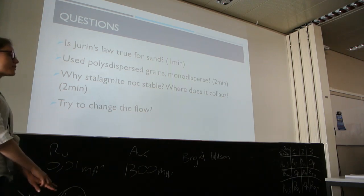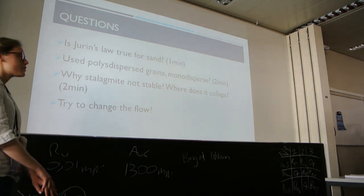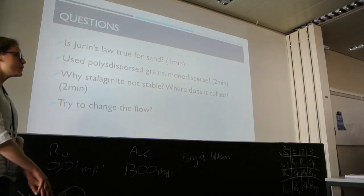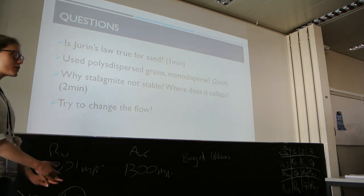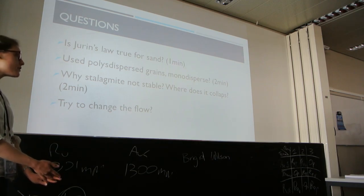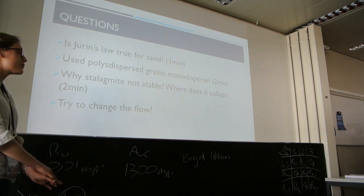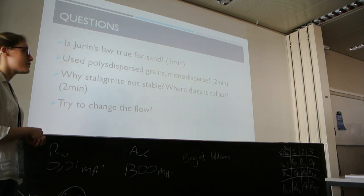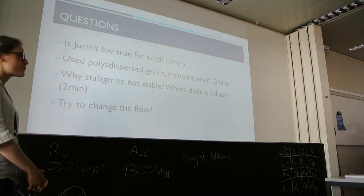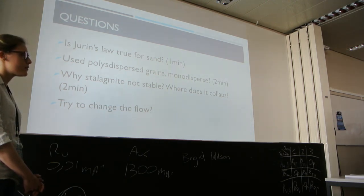On stalagmite stability and why it collapses: these towers collapse because you don't have a stable radius throughout. Where the tower has a smaller radius region, there are greater forces acting on that side, making it more likely to buckle under the pressure. The collapse is not necessarily due to water content alone — if you have a region of smaller radius, it will have more forces acting on it and is more prone to buckling failure.